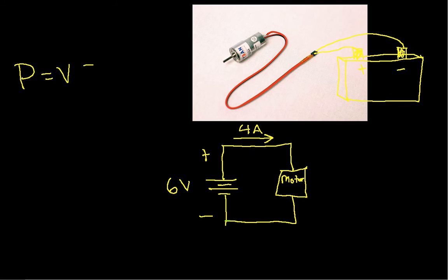So the question is, how much power is the motor dissipating? Well, I have power is voltage times current. This is the power dissipated by the motor. You can see the current going into the motor goes from a higher potential to a lower potential. So this is going to be 6 volts times 4 amps, which is 24 watts. So this motor is dissipating 24 watts.